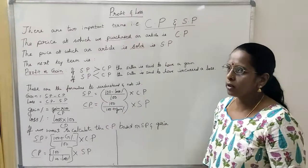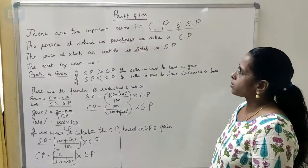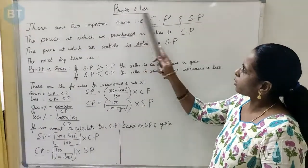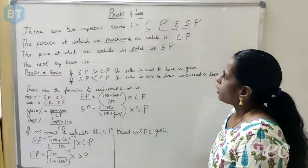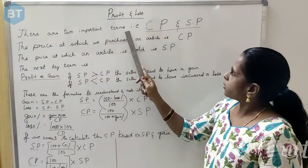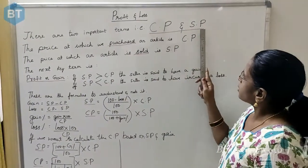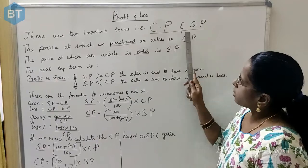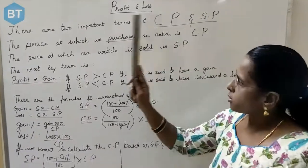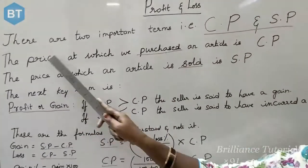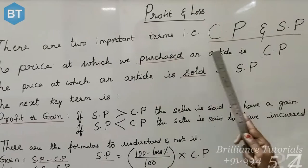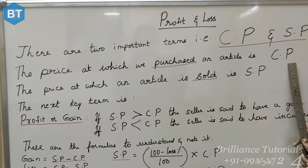Hello everybody, today I am going to explain about the chapter profit and loss. There are two important terms: cost price and selling price. What do you mean by cost price? The price at which we purchase an article is called the cost price.